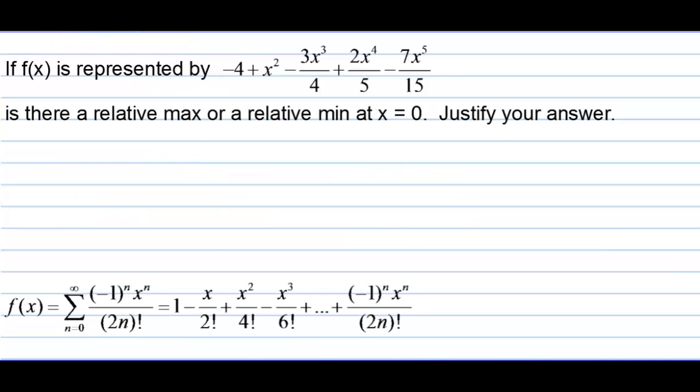If f of x is represented by that series, is there a relative max or relative min at x equals 0? Justify your answer. f prime of 0 is equal to 2x minus 9x squared over 4 plus 8x to the third over 5 minus 35x to the fourth over 15. Now, if I plug 0 into that, so f prime now is 0, that means we have a min or a max there. It had to be 0. If it was anything else, we wouldn't have a min or a max, so we kind of expected that. Now, here's where it can vary a little bit.